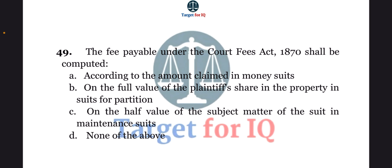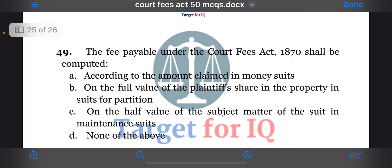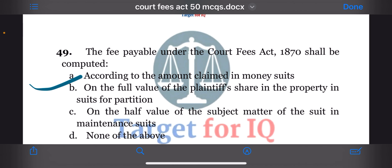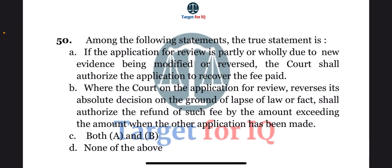Next question: the fee payable under the Court Fees Act 1870 shall be computed. The options are A. According to the amount claimed in money suits, B. On the full value of the plaintiff's share in the property in suits for partition, C. On the half value of the subject matter of the suit in maintenance suits, or D. None of the above. The correct answer is option A. According to the amount claimed in money suits.